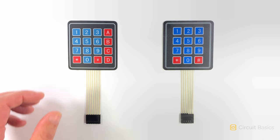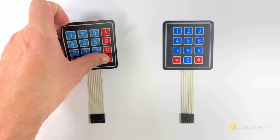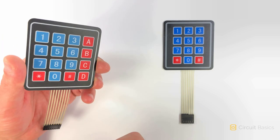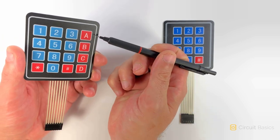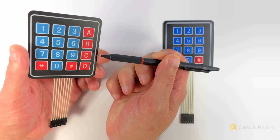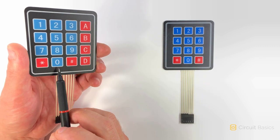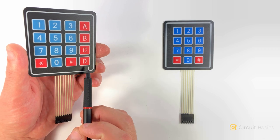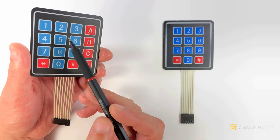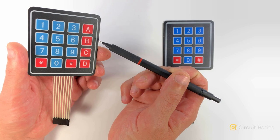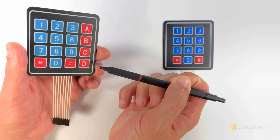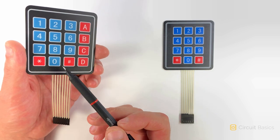Keypads are described by the number of rows and columns they have. I have a 4x4 matrix keypad here. It's got 4 rows and 4 columns, with numbers 0 to 9 and A, B, C, and D keys. There's also a hash and asterisk key.